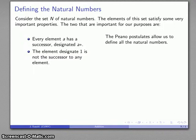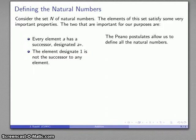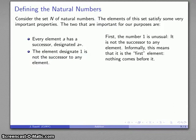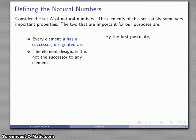Based on the Peano postulates, we can now define all of the natural numbers. Again, 1 is unusual. It's not the successor to any element. And so, again, informally, this means that it is the first natural number. Nothing comes before it. By the first postulate, every number has a successor. So, well, 1 is a number. So, 1 has a successor, which will designate 1 star.